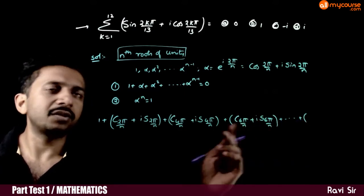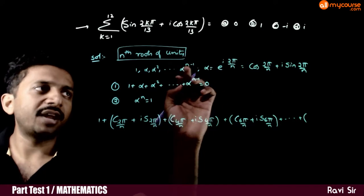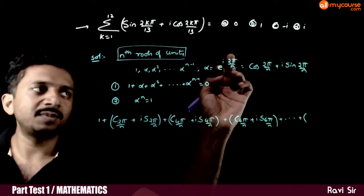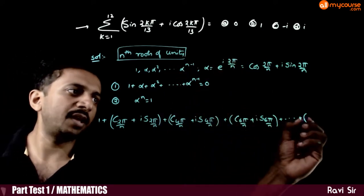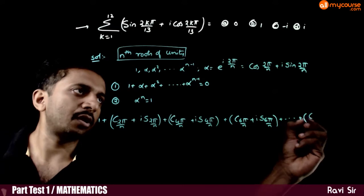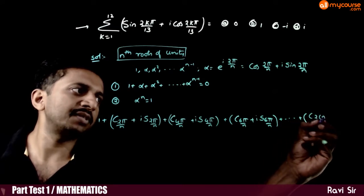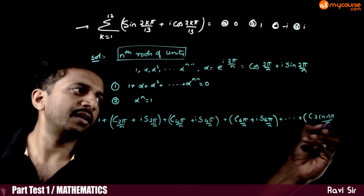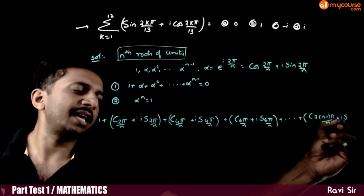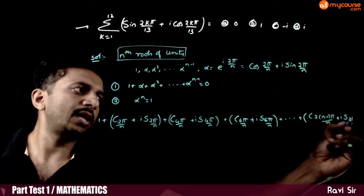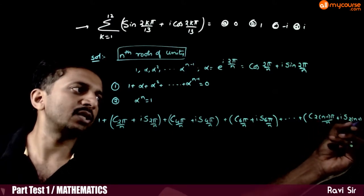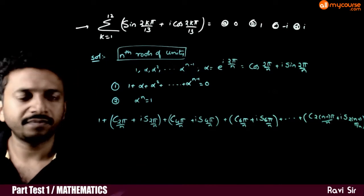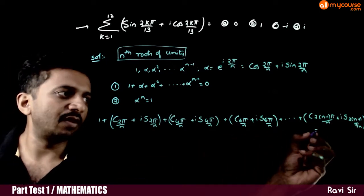Continuing up to alpha power n minus 1, which is e power i times 2(n−1)π/n. So, cos of 2(n−1)π/n plus i·sin of 2(n−1)π/n, and the entire sum is equal to 0.